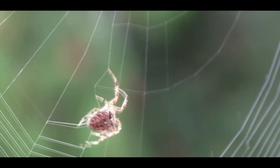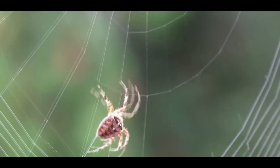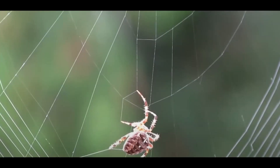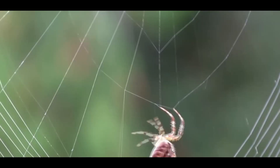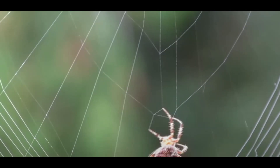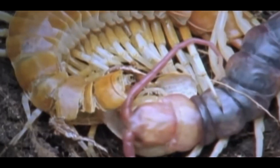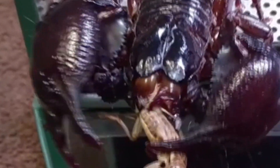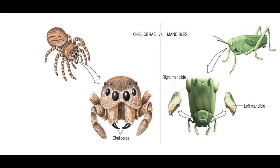Despite the diversity of forms, arthropods can be classified into two groups. The ones having a mandible are called mandibulates, and the ones having a chelicera in their first appendage are called chelicerates.